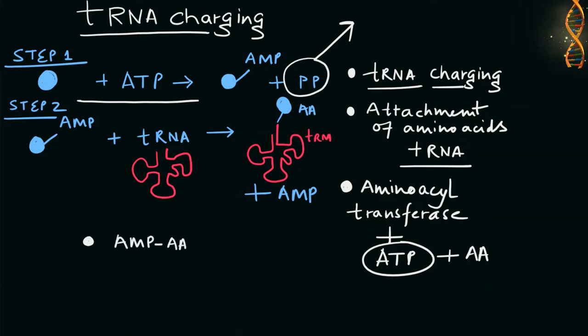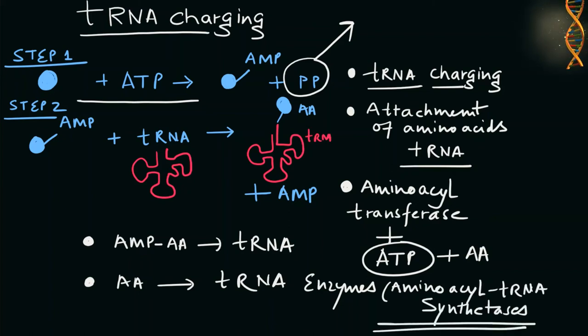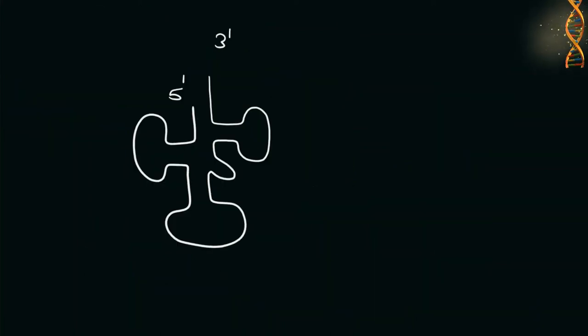In the second step, aminoacyl-tRNA synthetase binds AMP-tacked amino acid to its tRNA molecule. During amino acid activation, the amino acids are attached to their corresponding tRNA molecules. The coupling reactions are catalyzed by a group of enzymes called aminoacyl-tRNA synthetases.